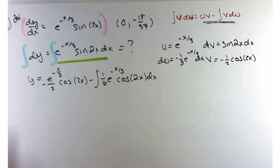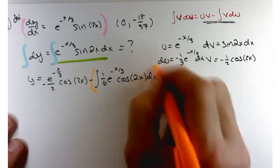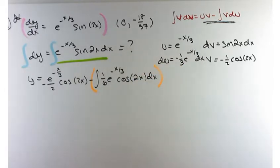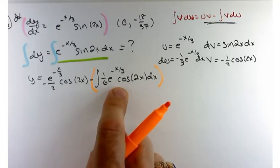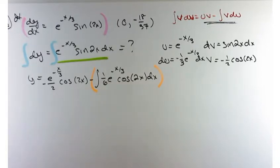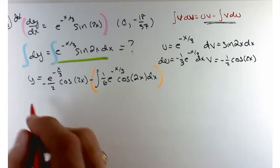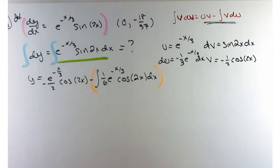So, DU is going to be negative 1 third E to the negative X over 3 DX, and V is going to be negative 1 half cosine of 2X. So, let's fill in our typical formula. The integral of U DV equals U times V minus the integral of V DU. So, it's this part that I need to fill in. So, U times V is going to be E to the negative X over 3 times negative 1 half times the cosine of 2X minus the integral of V DU.